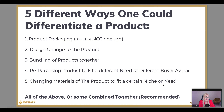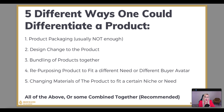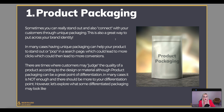In this presentation I'm going to speak about five different ways to differentiate a product. I don't think one is necessarily enough — I'd recommend combining at least three to four. The five are: product packaging, design change, bundling of products, repurposing products to fit a different buyer avatar, and changing materials to fit a certain niche or need. All of the above combined is recommended.